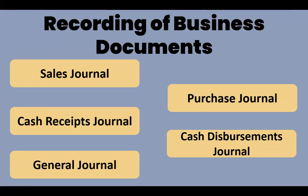General journal: records transactions which cannot be recorded in the sales journal, purchases journal, cash receipts journal, or cash disbursement journal. Examples of these transactions are the owner's investment in the form of equipment, sales returns, and purchase returns.